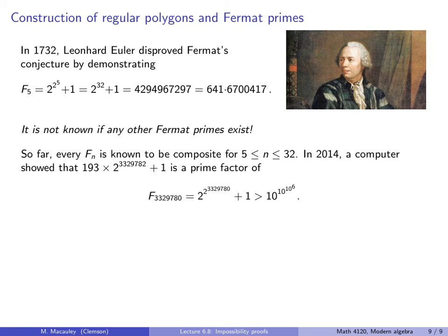However, we do know a lot of larger Fermat numbers that happen to be composite. The largest of these was discovered in 2014 when a computer showed that 193 times 2 to the 3,329,782 plus 1, which, by the way, is prime, is a prime factor of the Fermat number f3,329,780, which, of course, is 2 to the 2 to that big number plus 1. That is greater than 10 to the 10 to the 10 to the 6. So I don't know if that helps or makes it worse, but it's huge. And that factor, that number, is, in fact, composite.